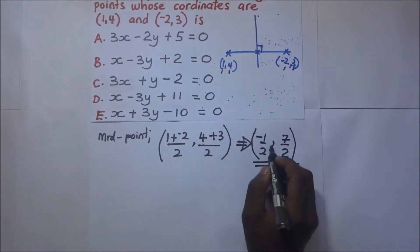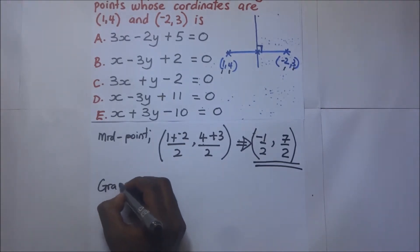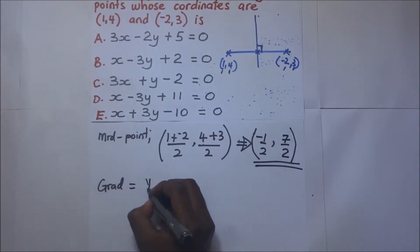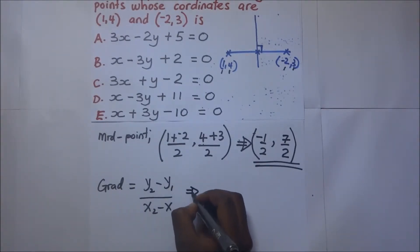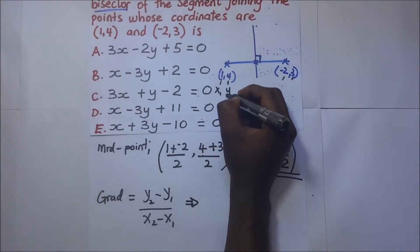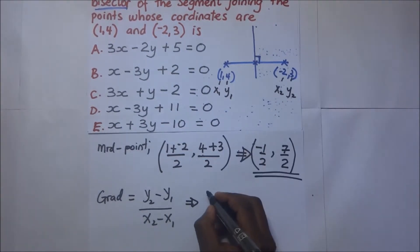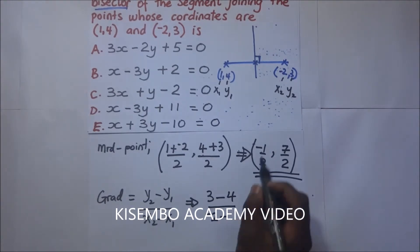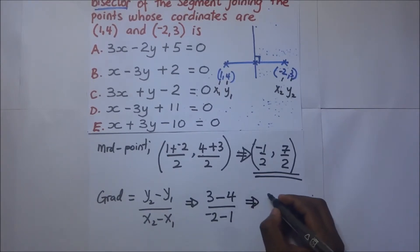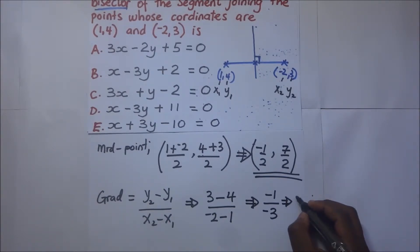This is the midpoint, so the perpendicular bisector passes through this point. Now let's find the gradient of the original line joining (1, 4) and (-2, 3). Using y2 minus y1 over x2 minus x1, that is 3 minus 4 over negative 2 minus 1, which is negative 1 over negative 3, giving us a gradient of 1 over 3.